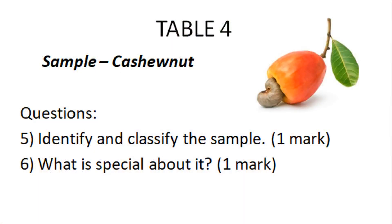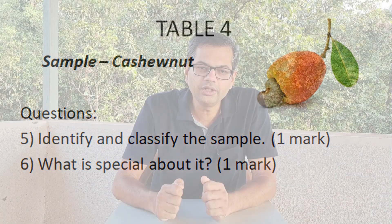On the same table, there was a part two — a cashew fruit and seed were kept. For the identification question, you should write it is a cashew plant, classification dicot flowering plant. The speciality is that the seed is outside the fruit. Overall, six marks and six minutes for this table.